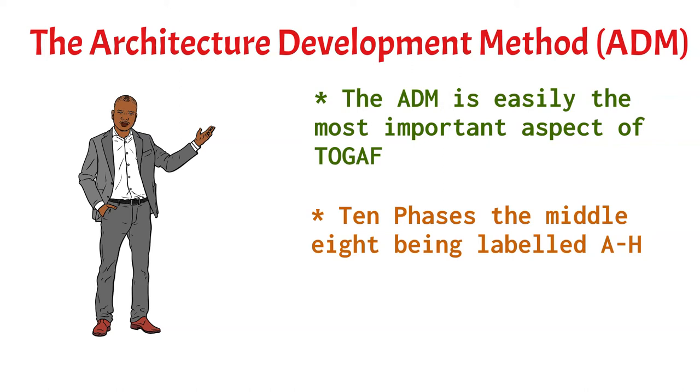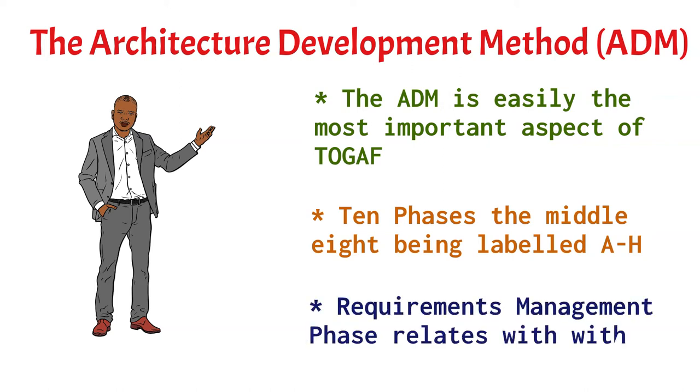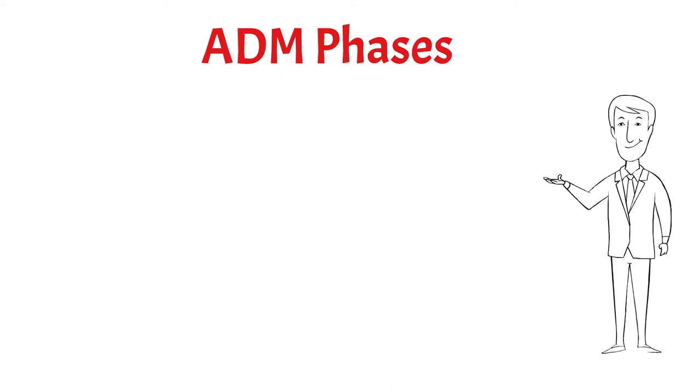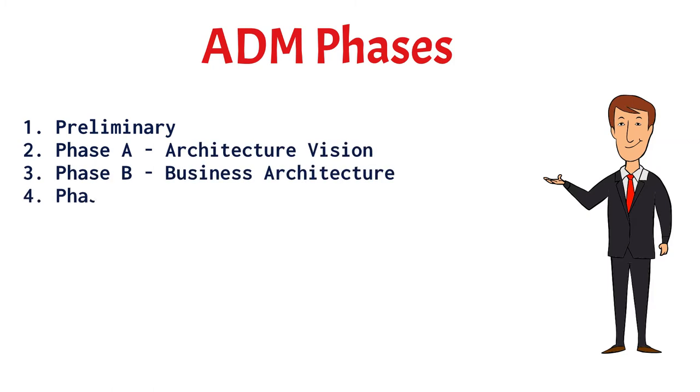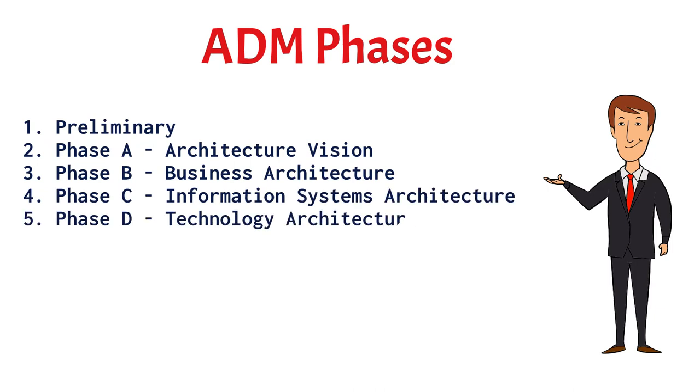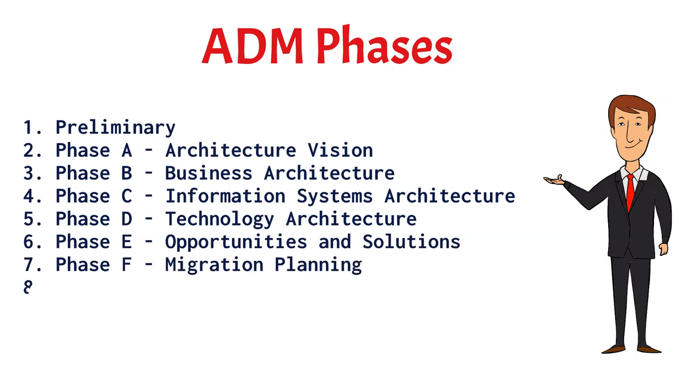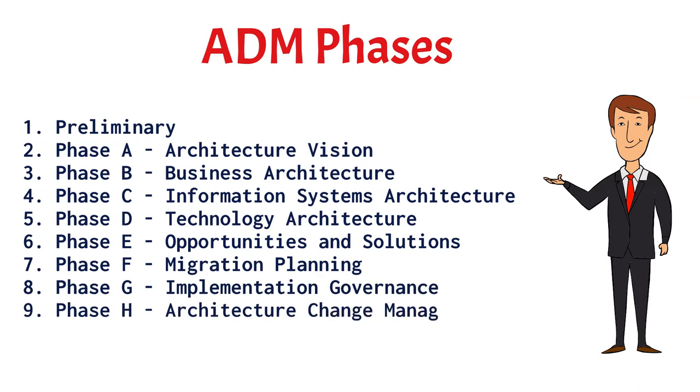The requirements management phase interfaces with all the phases A to H in the entire process. The full listing of the ADM phases are the preliminary phase, architecture vision phase, business architecture phase, information systems architecture phase, technology architecture phase, opportunities and solutions, migration planning, implementation governance, architecture change, and requirements.